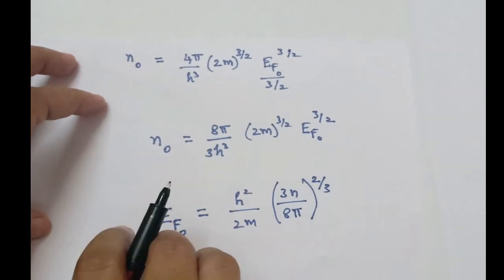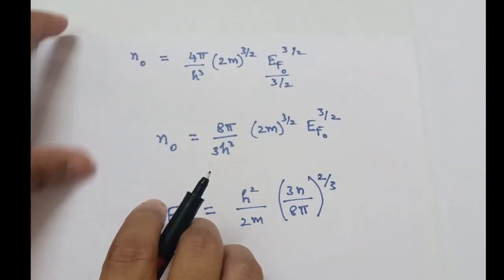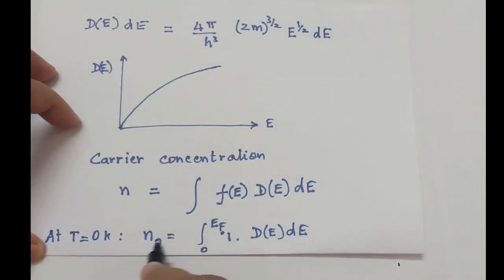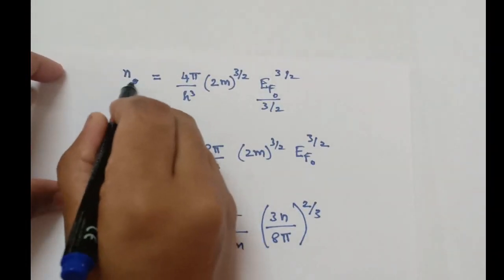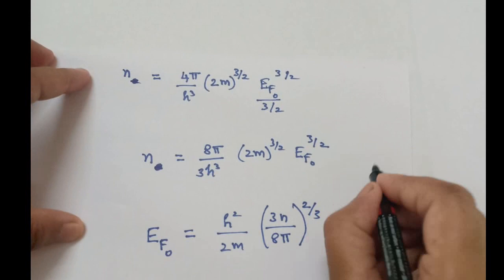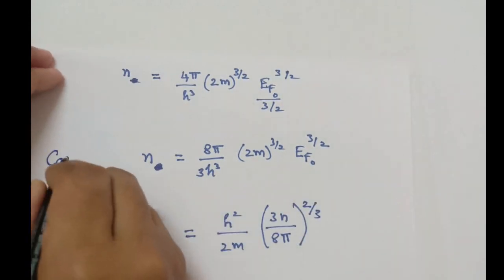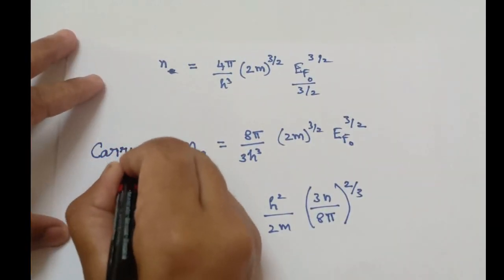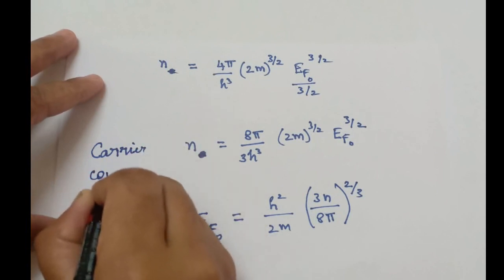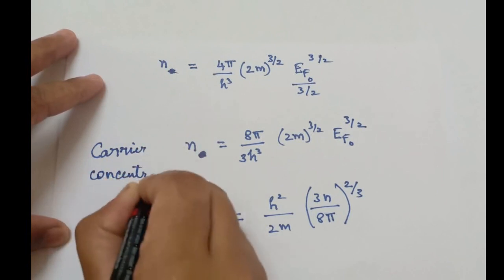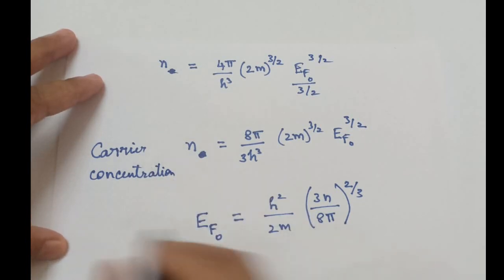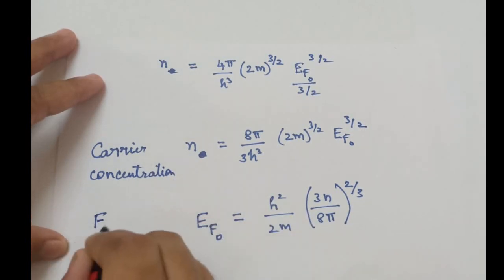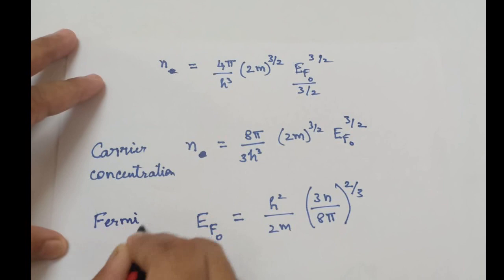On rearranging this expression, you can also find the Fermi energy at absolute zero, which turns out to be: EF₀ = (h²/2m)(3N/8π)^(2/3). So we have expressions for both carrier concentration and Fermi energy at absolute zero.